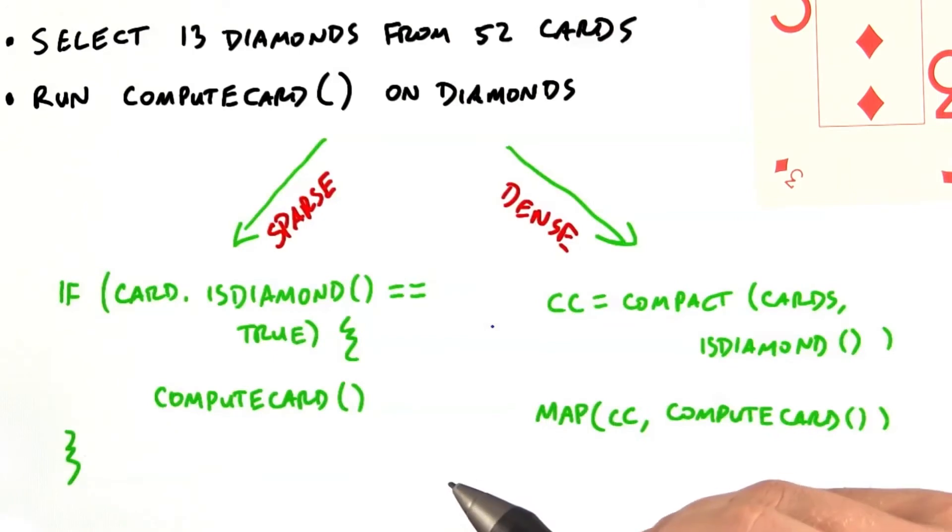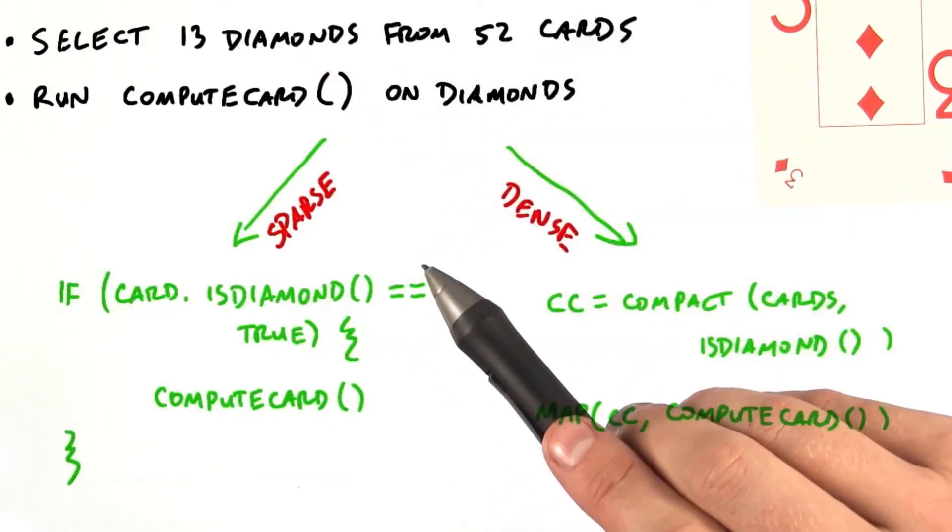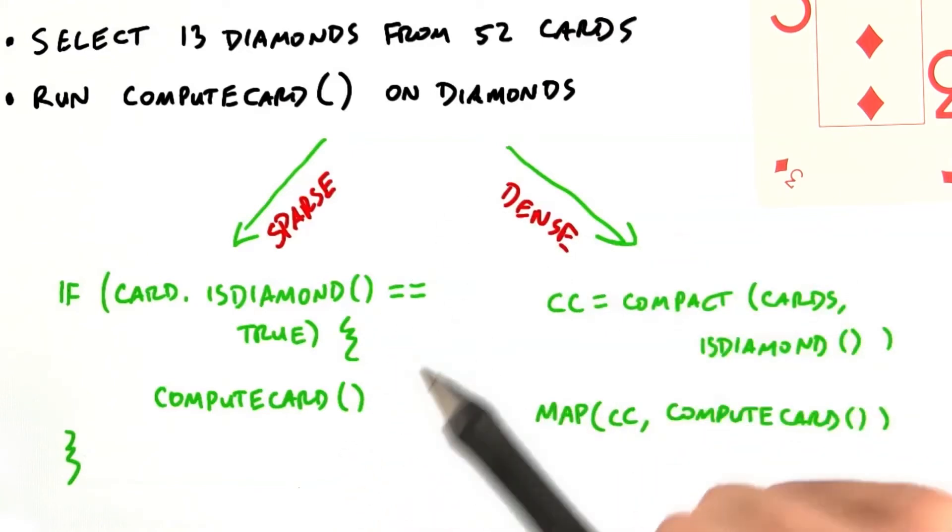Let's go back to one of the examples I cited earlier. Selecting the 13 diamonds from a deck of 52 playing cards and running a procedure called compute card on each of the diamonds.